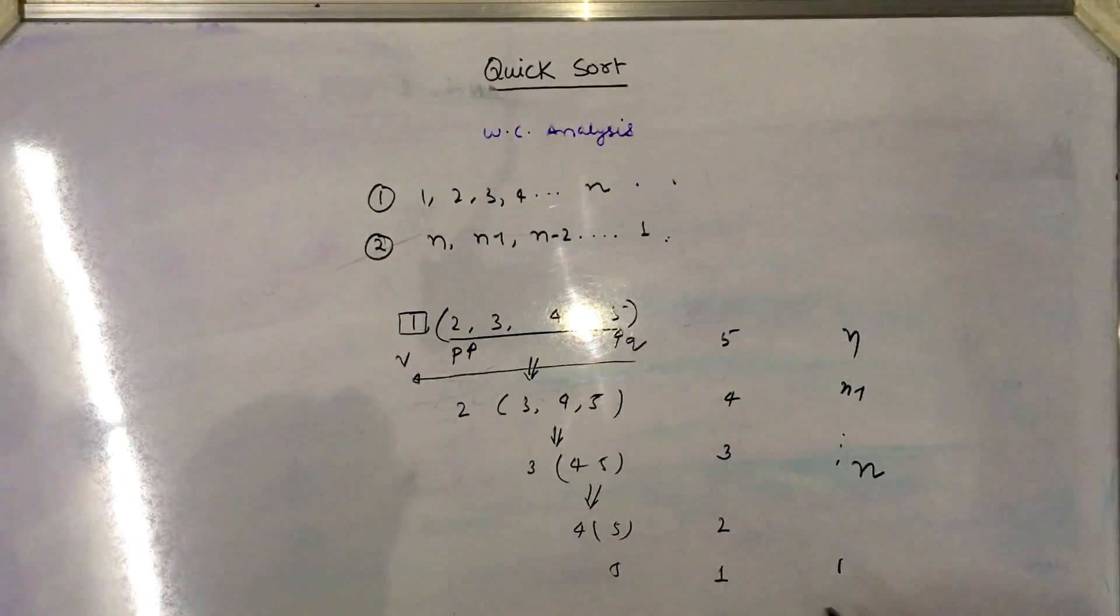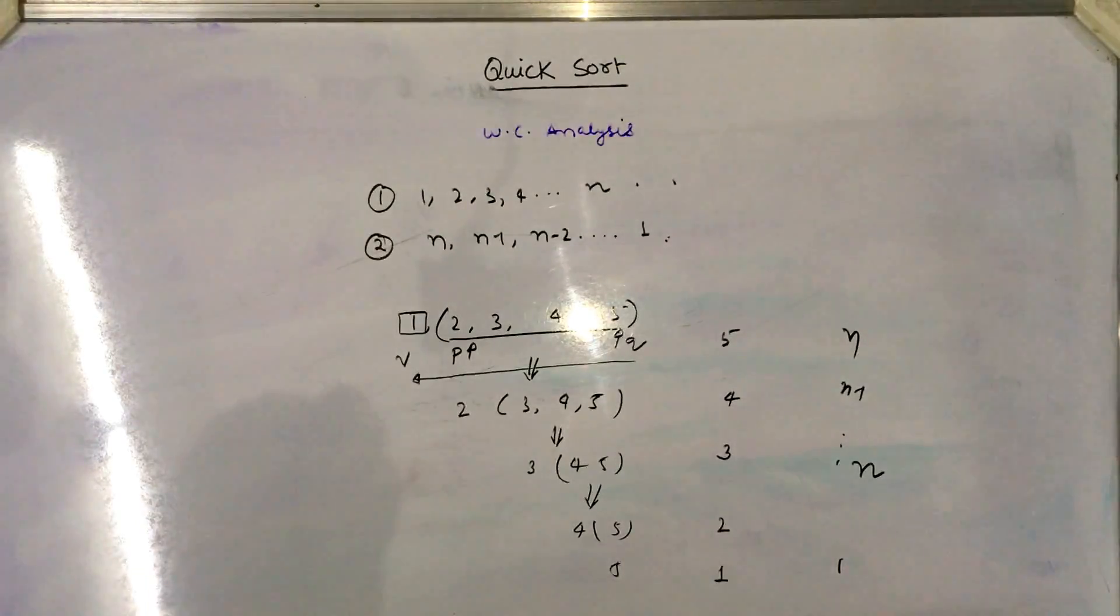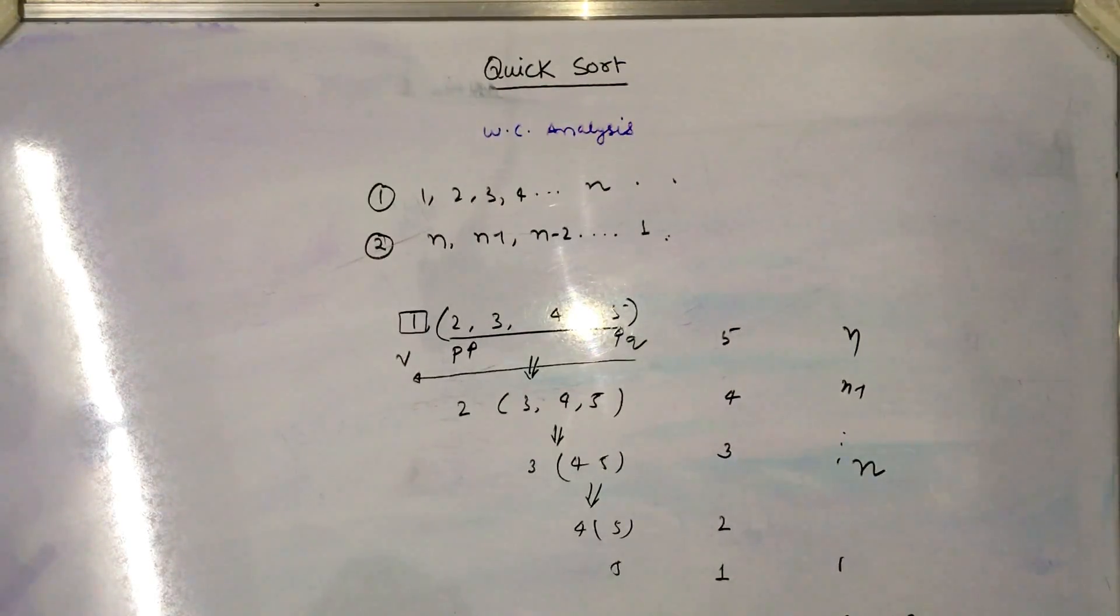So this will return a recurrence relation as the time complexity taken by this sorted sequence is T(n) is equal to T(n-1) plus n, and this is nothing but order of n square. So the time complexity given by this is order of n square.